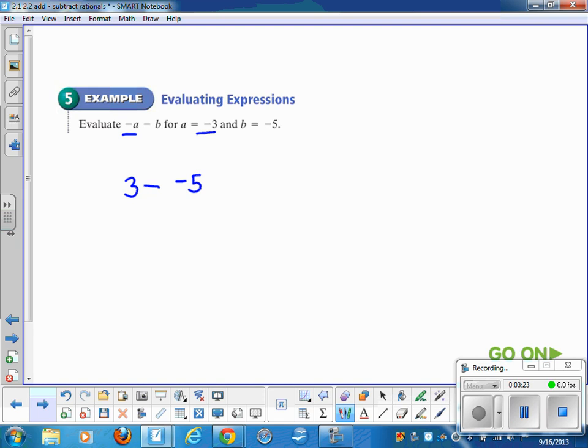And then minus B. B is negative 5, so we end up with 3 minus negative 5. And anytime I see a subtraction problem, I'm going to add the opposite. So leave the first one alone, add the opposite, and we get that our answer is 8.